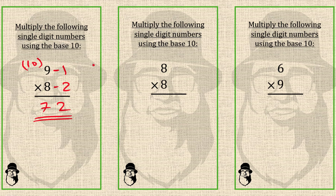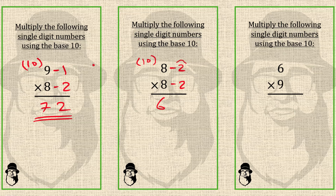Here we have 8, and our base is 10 because both numbers are near 10. 8 is 2 far from 10, so we'll write minus 2. Again minus 2. Now we can do 8 minus 2, that is 6 — left part of the answer. And 2 times 2 is 4 — that is the right part of the answer. 8 times 8 is 64.